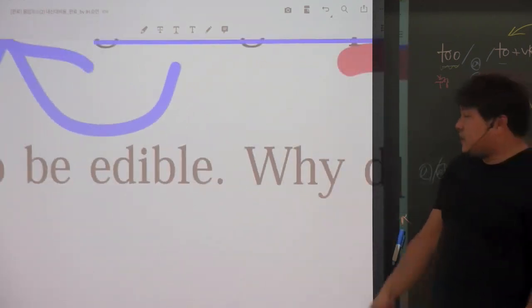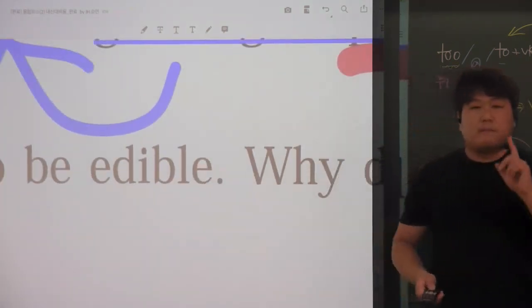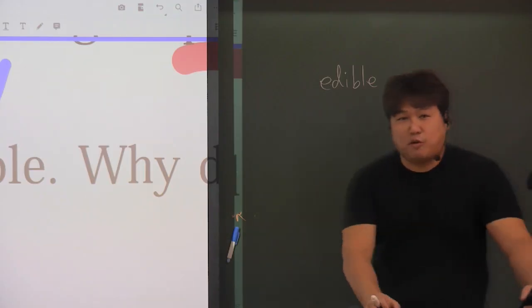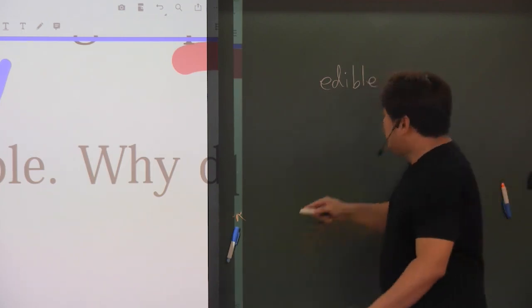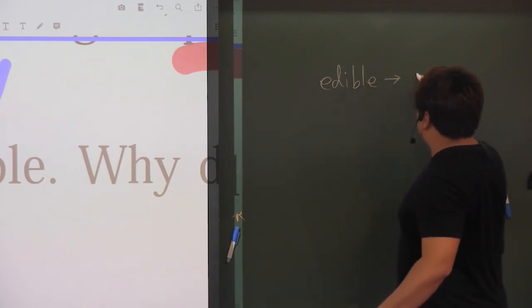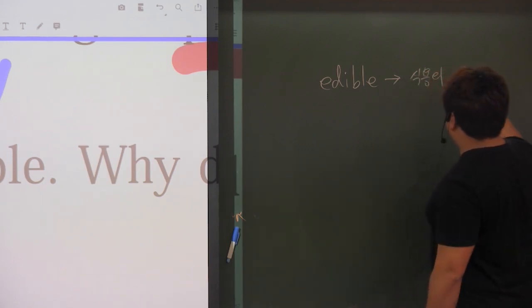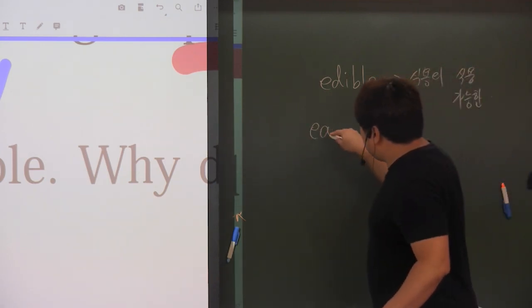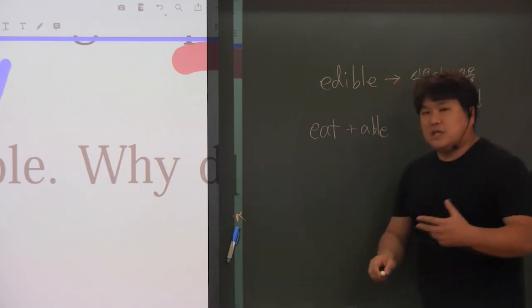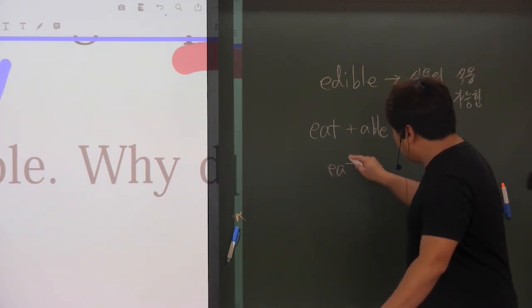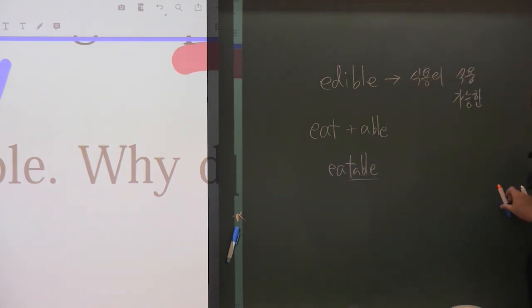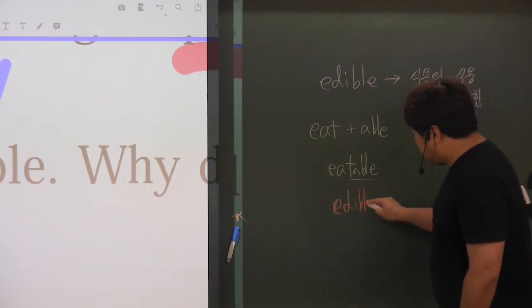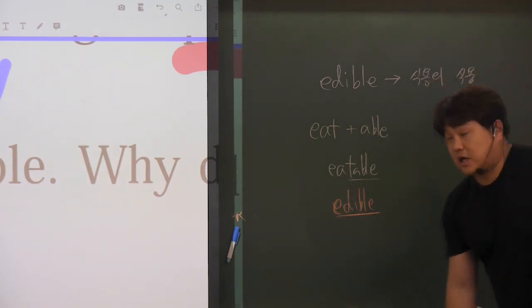'edible'이란 단어죠. 'edible' 형용사로 '먹을 수 있는'이란 뜻인데요. 여러분 청산가리도 먹을 수는 있어요. 핵폐기물도 먹을 수는 있죠. 근데 실제로 먹으면 안 되는 거죠. 그래서 '먹을 수 있는'이란 단어보다는 '식용의', '식용이 가능한' 이런 단어로 외워두신 게 좋습니다. 원래 이 단어는 'eat'에다가 '-ible'을 붙인 거예요. 그래서 'eatable'이었죠. 'edible' - 근데 발음이 너무 어려운 거야. 그리고 잘못 읽히면 '테이블'처럼 보이기도 해. 그래서 이거를 발음을 좀 더 쉽게 하기 위해서 'edible' 이런 단어로 바꿔준 거다라고 볼 수 있습니다.